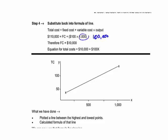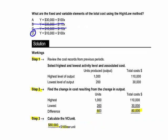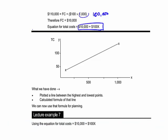We end up with the total cost equation: y = $10,000 + $100x. What we've effectively done is plotted a line between the highest and lowest levels of output — in this case 200 units and 1,000 units. Using that equation for total cost, we can multiply the variable cost by the number of units we're going to be producing. We've got $78,000 of expected variable costs and $10,000 of fixed costs, so total predicted costs are $88,000.